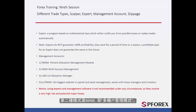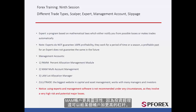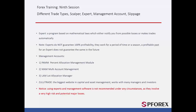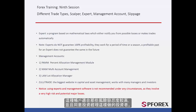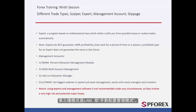The second type is MAM, or Multi Account Management. MAM accounts are more flexible because the manager can also reassign a higher leverage to specific accounts in the MAM from investors who have a higher risk tolerance and have agreed to it. The third type is LAM, or Lot Allocate Manager. In LAM accounts, the manager will decide the precise amount of a lot for a position.